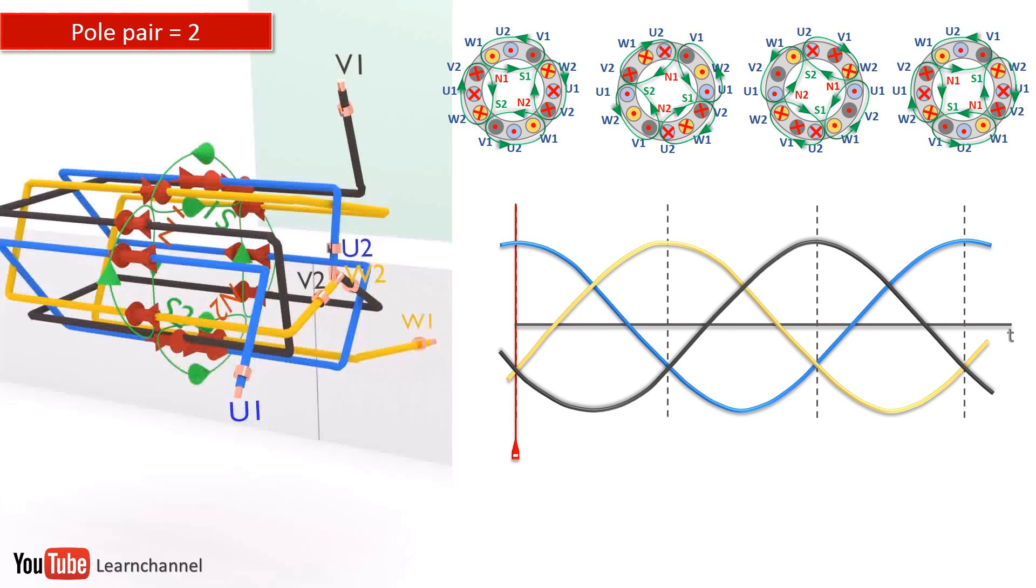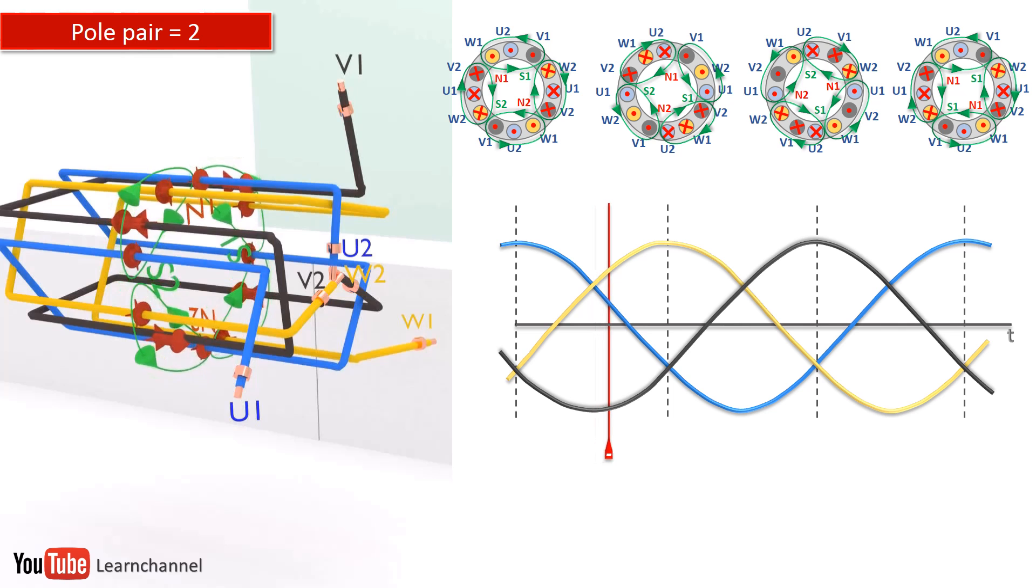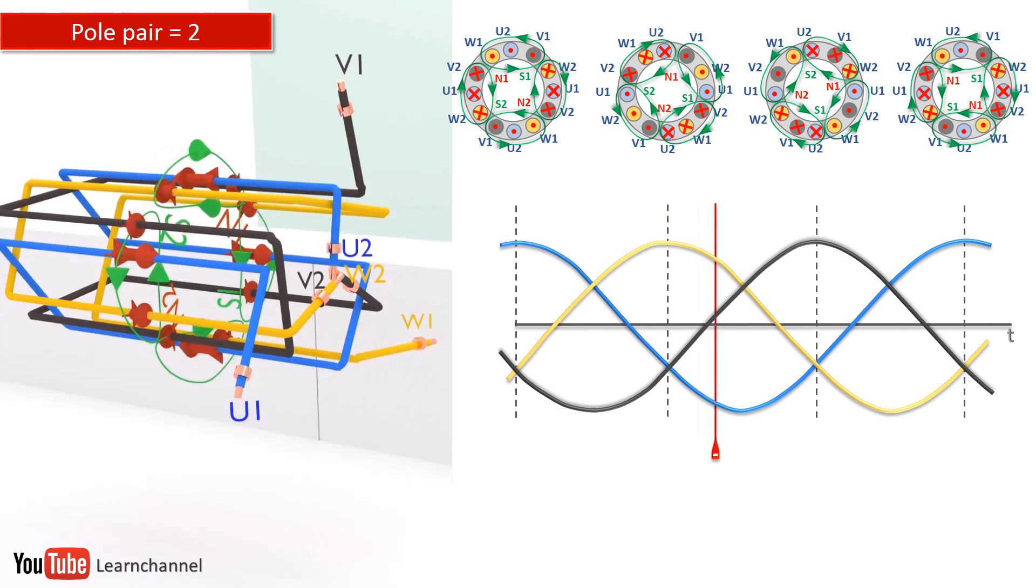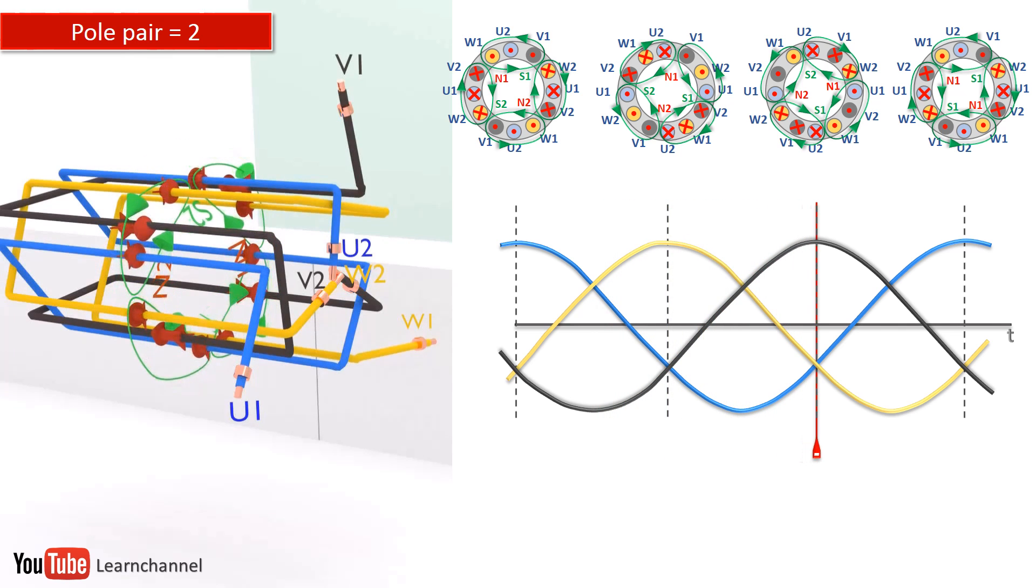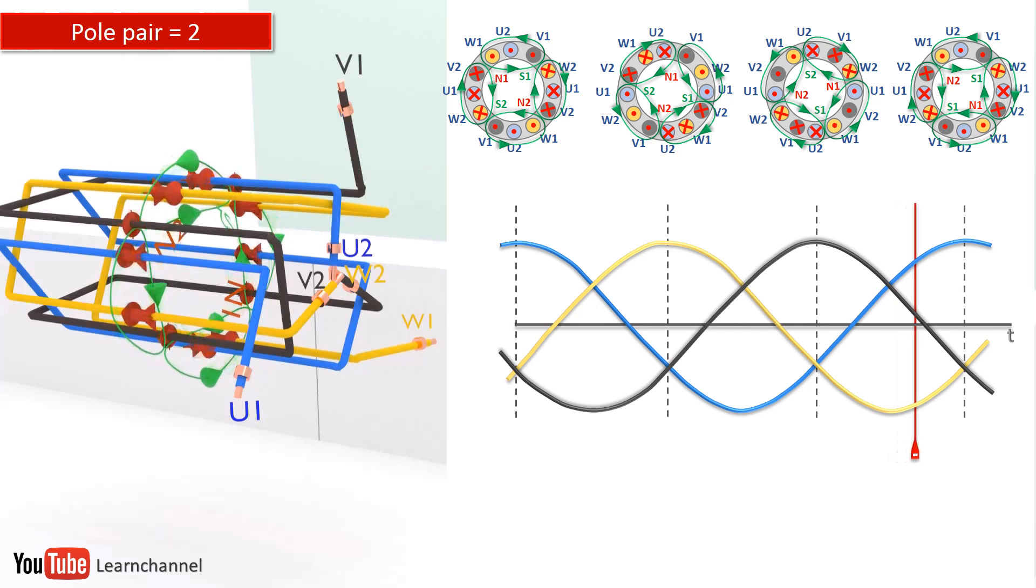With this arrangement of the wires, we now have four poles. Let's start the animation once more and watch the speed of the RMF. What you can note is that the speed of the magnetic field has become half.